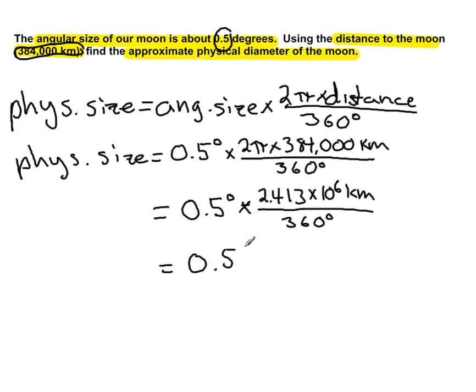Still leaving that 0.5 alone, I'm going to divide in the fraction here, so I'm going to take 2.413 times 10 to the 6 kilometers divided by 360 degrees, and what I get is 6.702 times 10 to the 3.